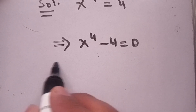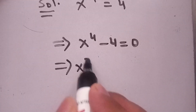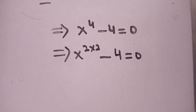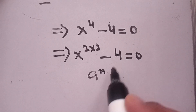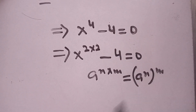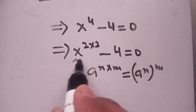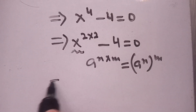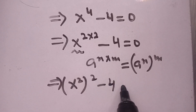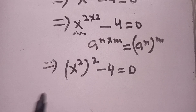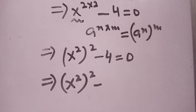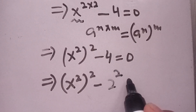In the next step we can write x power 4 as 2 times 2, making it x power 4 minus 4 equals 0. We know that a power n times m equals a power n bracket power m. Applying this identity, we get x power 2 bracket power 2 minus 2 power 2 is equal to 0.